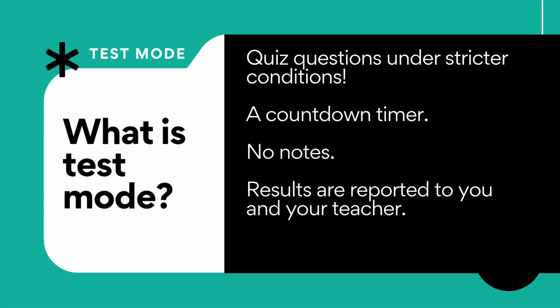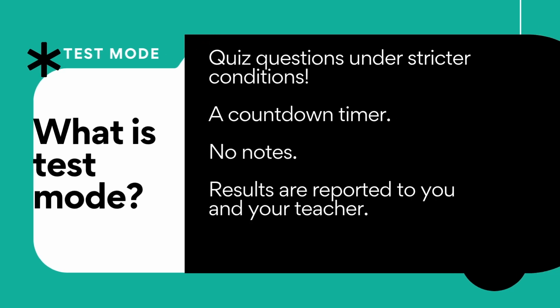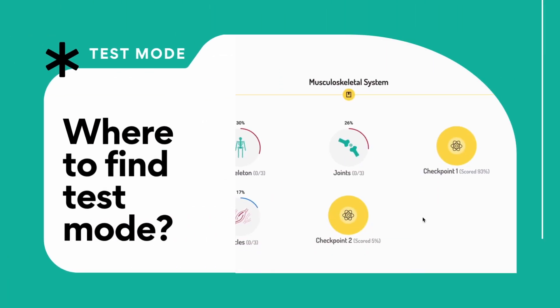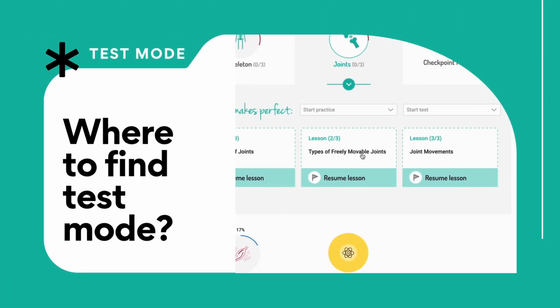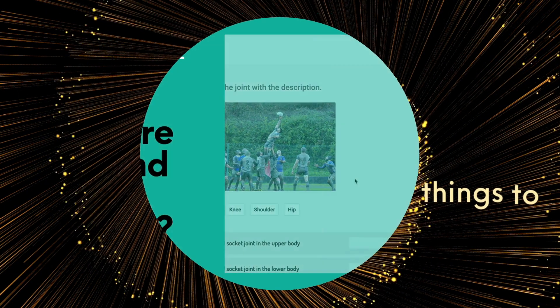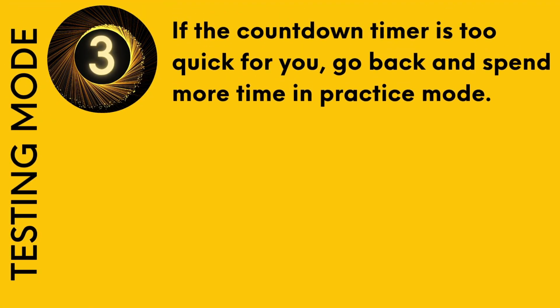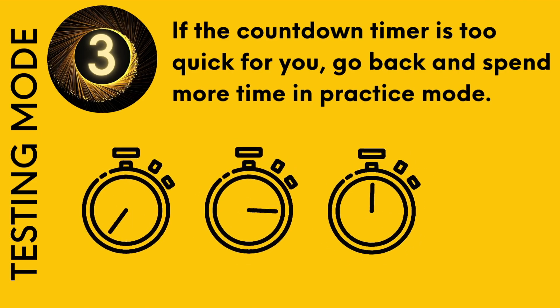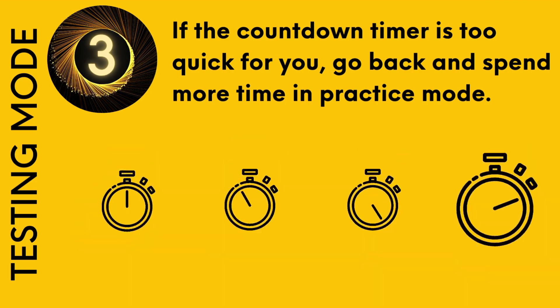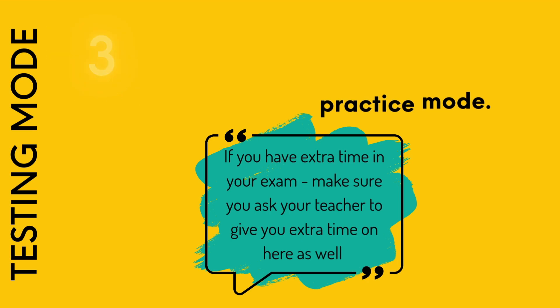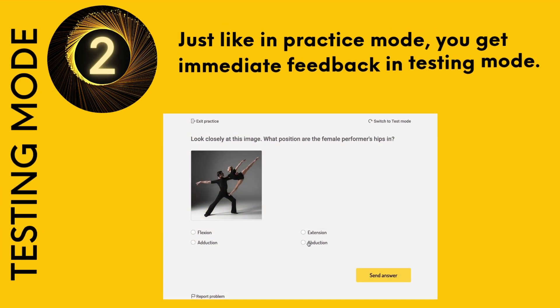Test mode. What is test mode? It gives you questions under strict conditions. There's a countdown timer, no notes, and your results are reported to you and your teacher so you can see how well you are getting on. Find test mode just below practice mode — go to the lesson and click test yourself. If the countdown timer is too quick for you, go back and spend more time in practice mode. If you have extra time in your exam, talk to your teacher as they can give you more time.